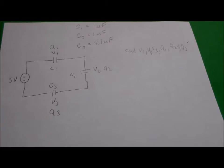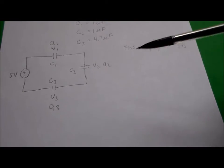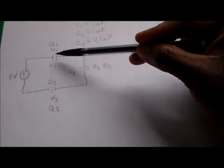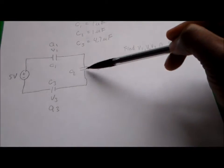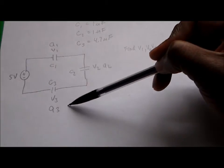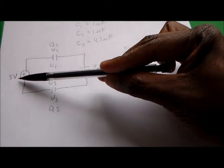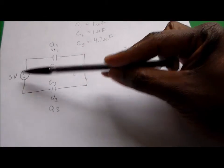For this problem, you have three capacitors that are in series — capacitor number one, capacitor number two, capacitor number three — and they're in series with a five-volt voltage source.